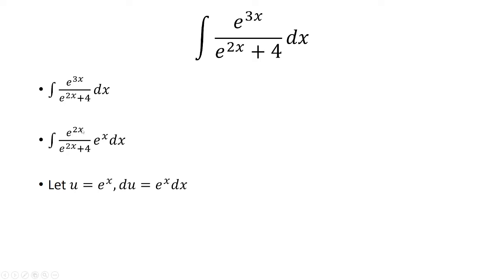Now here we have e to the 2x, which is just u squared. So that becomes u squared over u squared plus 4. And then e to the x dx is du.